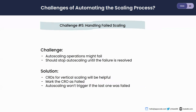The next challenge is handling failed scaling. An auto-scaling operation might fail for several reasons — for example, database nodes might not rejoin the cluster after restart. When an auto-scaling operation fails, the database may not be in a healthy state. The auto-scaler should know this and shouldn't perform any subsequent operations until the failure is resolved. Using CRDs, we can mark the vertical scaling operation as failed, and the auto-scaler will check if the last operation was successful before triggering a new one.